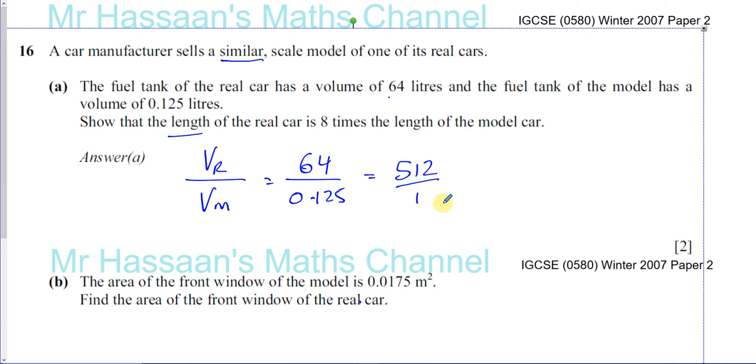So therefore the length of the real car divided by the length of the model car is going to be the cube root of 512 over 1, which gives you 8.